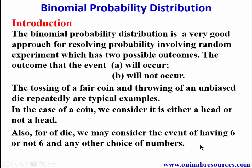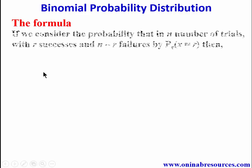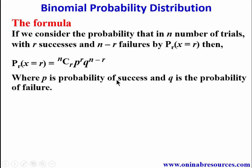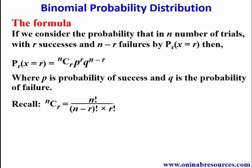Now we look at the formula. If we consider the probability that in n number of trials with r successes and n minus r failures, then P(X = r) = nCr × p^r × q^(n−r), where p is the probability of success and q is the probability of failure. Recall that nCr is n factorial over (n minus r) factorial times r factorial.